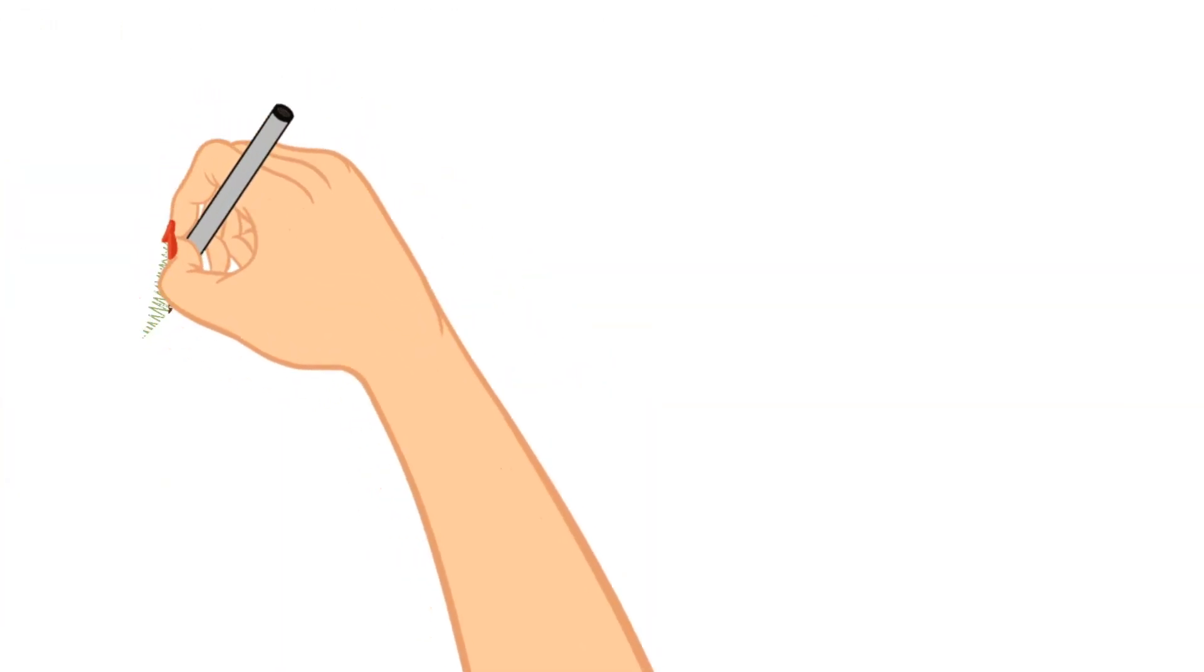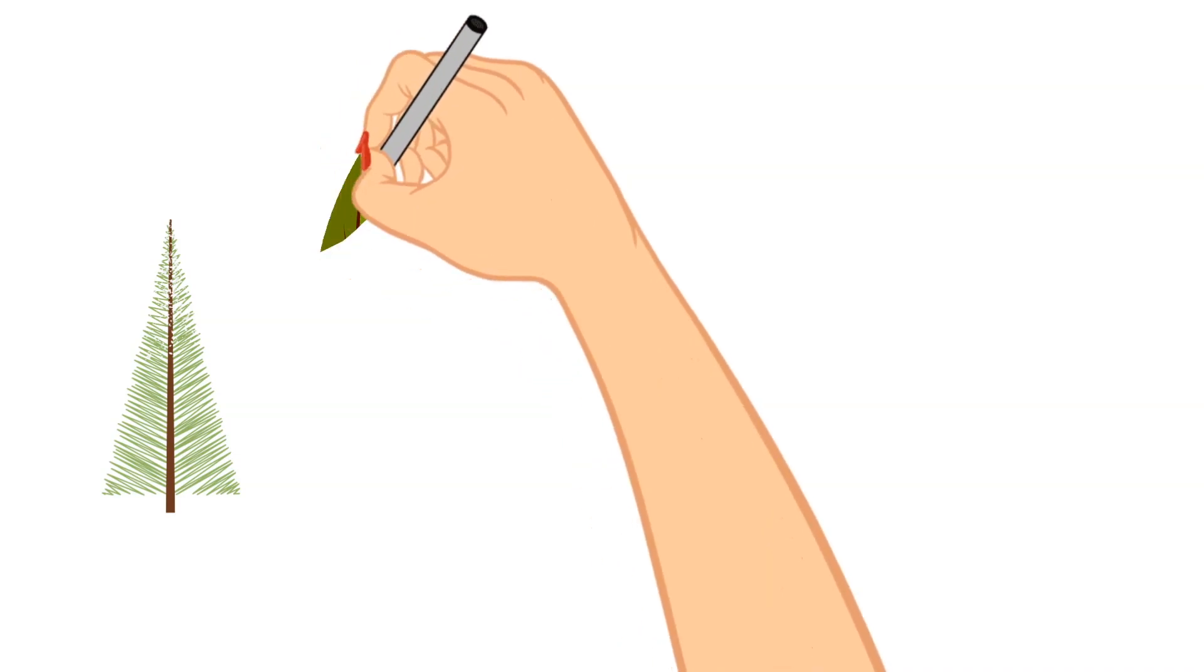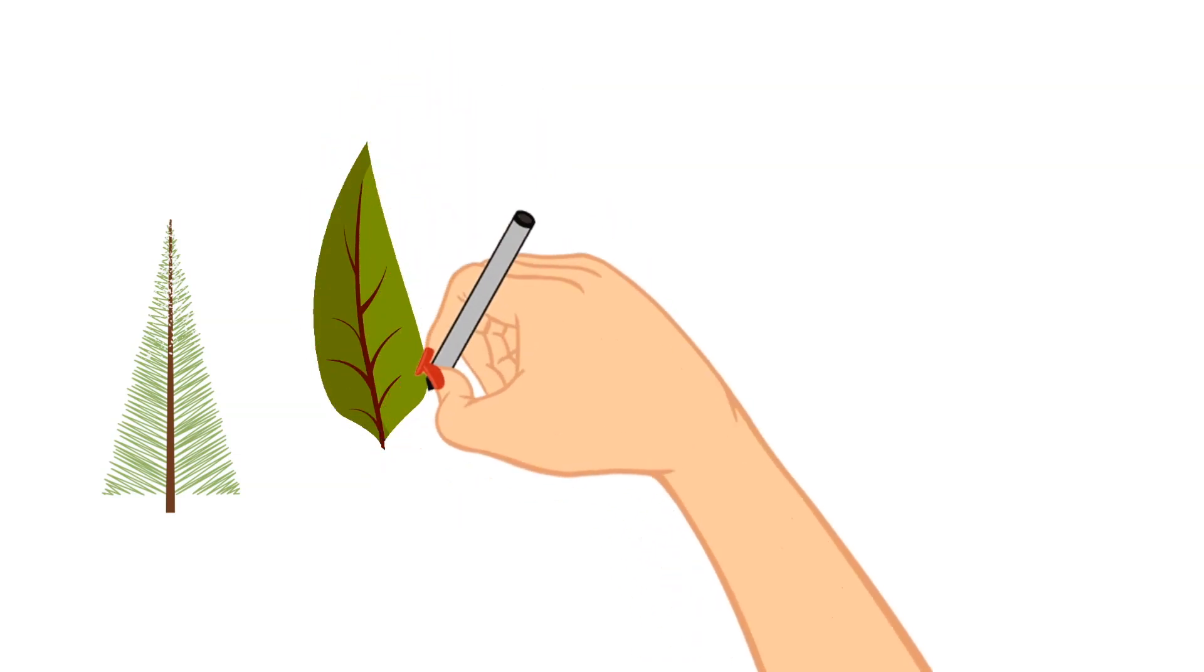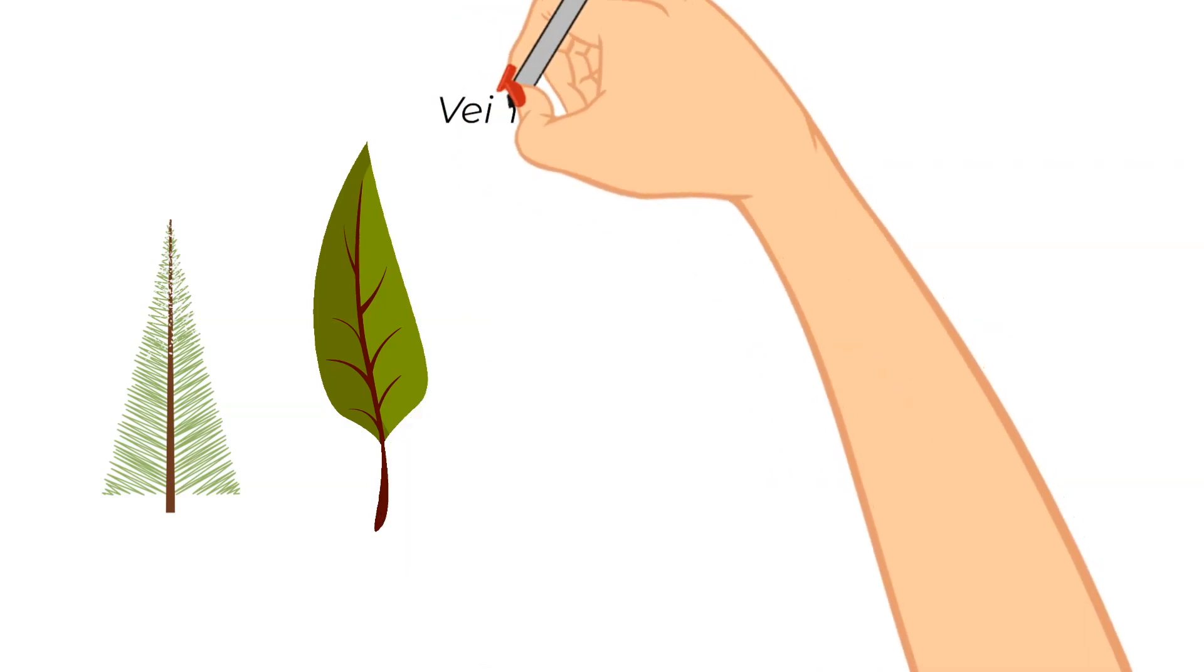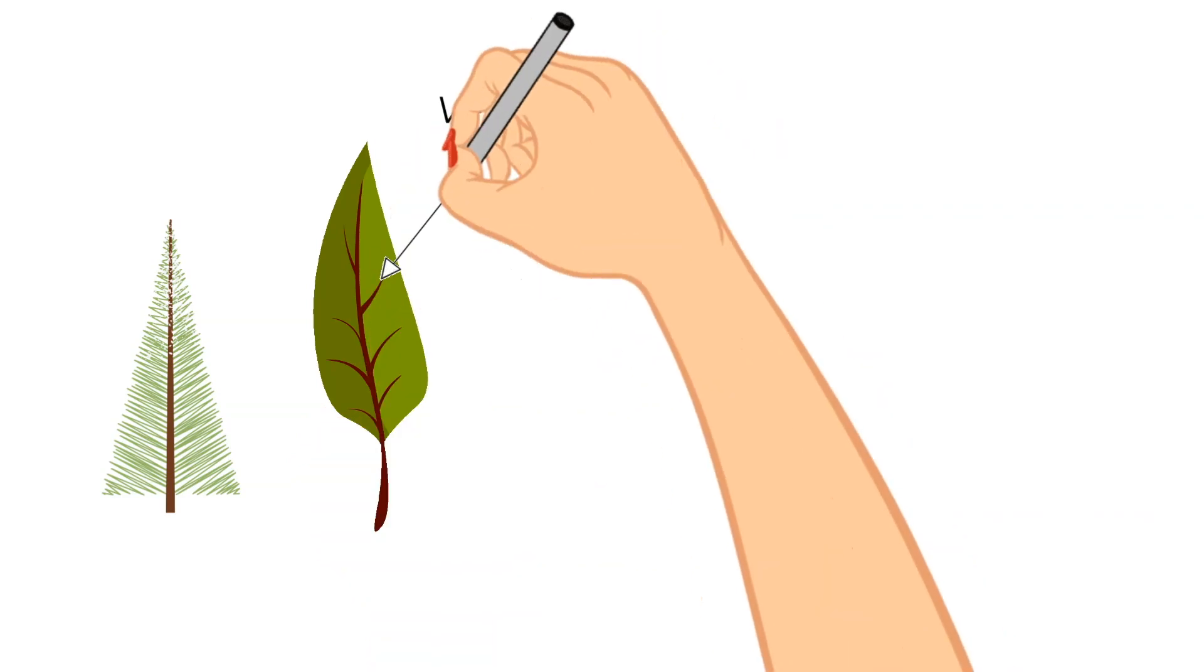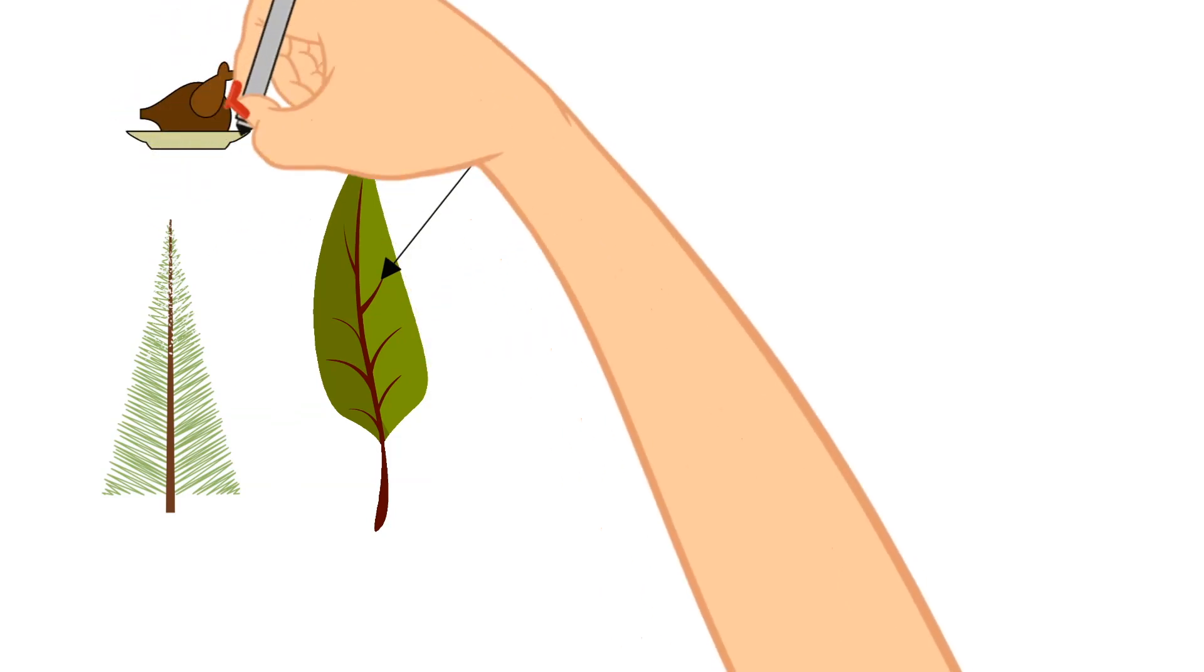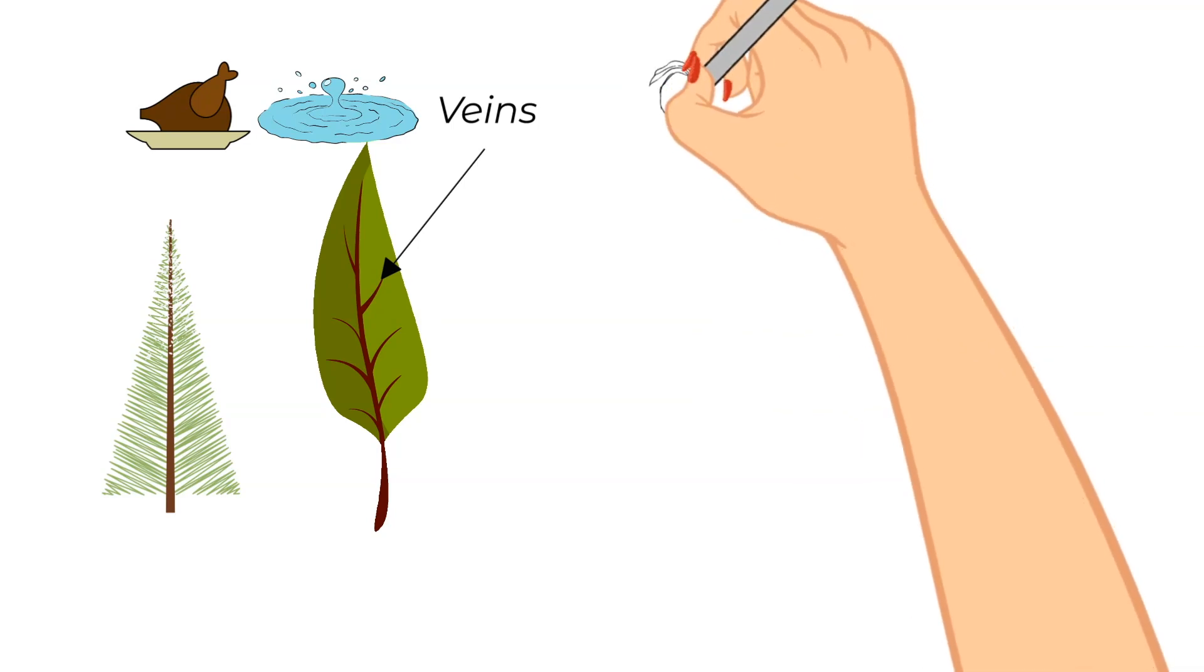So when it comes to the structure of a leaf, this varies greatly. There are needles, which belong to evergreens, and then there are flat leaves on other plants. And in these flat leaves, there are veins. These veins work a lot like blood vessels inside an animal or a person's body. They carry that food and water to and from the leaves.